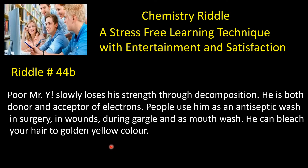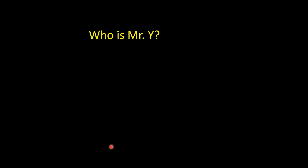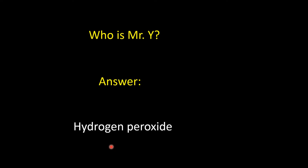Riddle 44B goes like this: Poor Mr. Y slowly loses his strength through decomposition. He is both a donor and acceptor of electrons. People use him as an antiseptic wash in surgery, on wounds, during gargling, and as a mouthwash. He can bleach your hair to a golden yellow color. First question: who is Mr. Y? The answer is hydrogen peroxide.